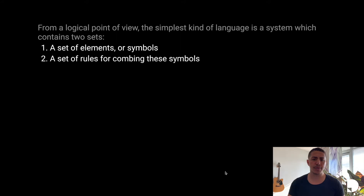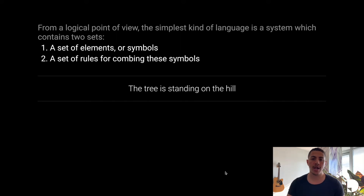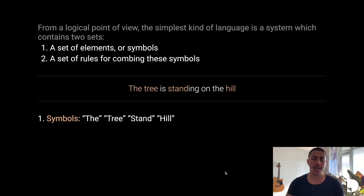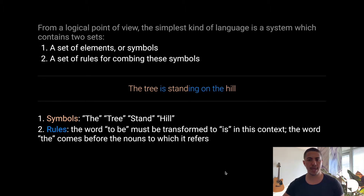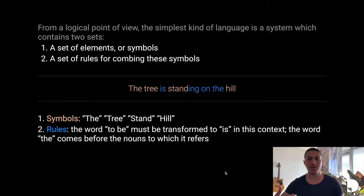The English language is actually one of the most complex language systems. If we take a simple sentence like 'the tree is standing on the hill,' the words themselves are the symbols — tree, stand, hill — and then we have rules that tell us how to combine these words to create a sentence. The simplest of these rules being grammar, which tells you that 'to be' must be transformed to 'is' in this context, and that 'the' comes before the nouns to which it refers.